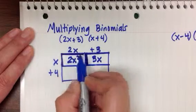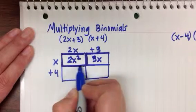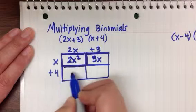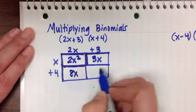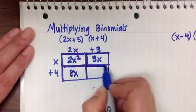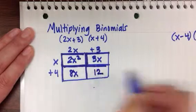Same again, if this side is 2x, opposite sides are equal. This side has to be 2x by 4. 2x times 4 is 8x. And lastly, 4 by 3. 4 times 3 gives me an area of 12.